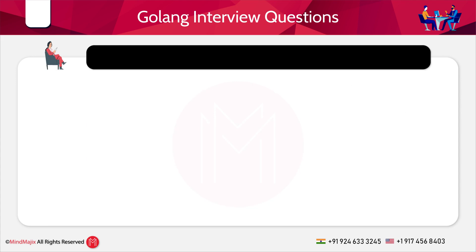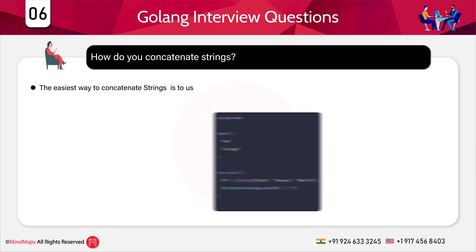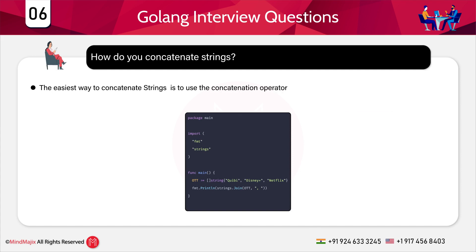How do you concatenate strings? The easiest way to concatenate strings is to use the concatenation operator, which is the plus sign. This allows you to add strings just as you would numerical values. The plus operator not only adds two numbers but also concatenates — meaning joins — two or more strings together.